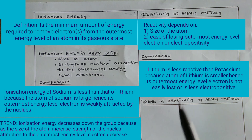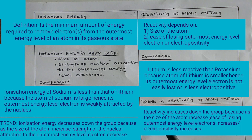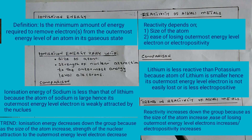When we look at the trend in reactivity of alkali metals down the group, we say reactivity of alkali metals increases down the group. The reason is that as the size of the atom increases, the ease of losing electrons increases. You can also say that as the size of the atom increases, electropositivity increases.